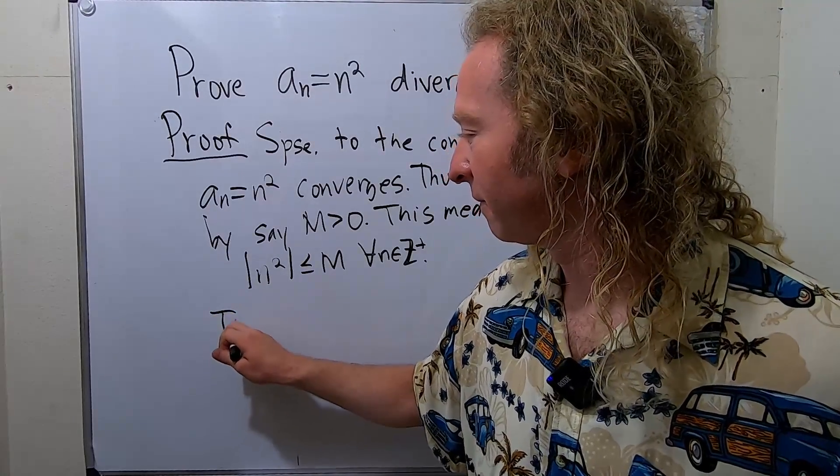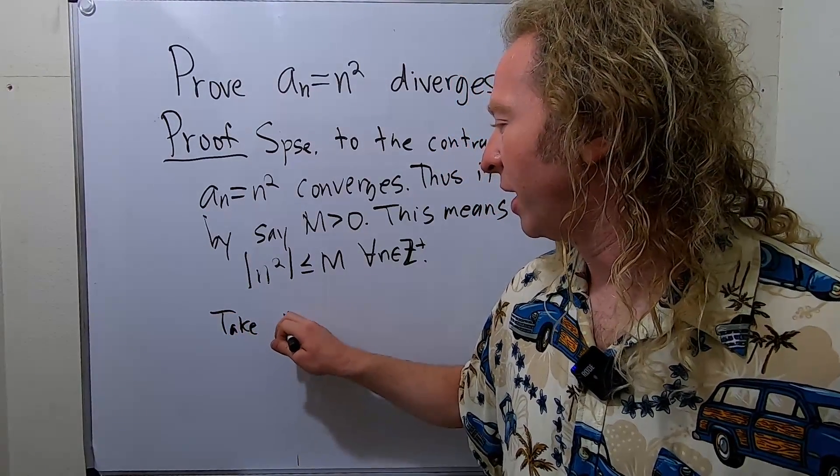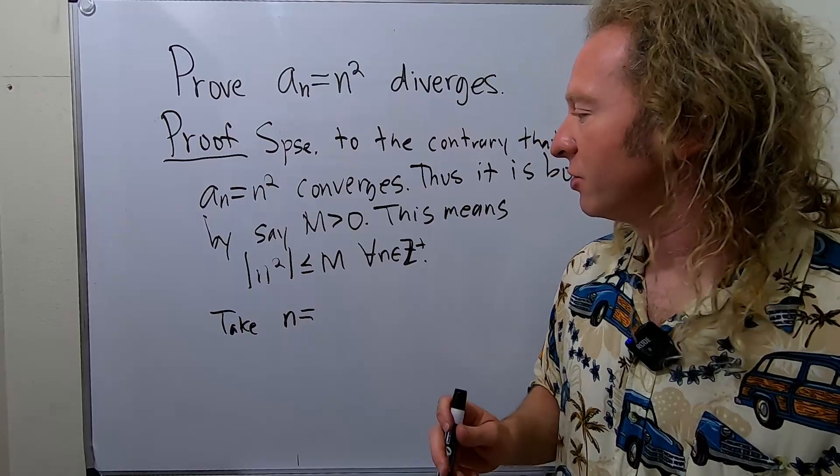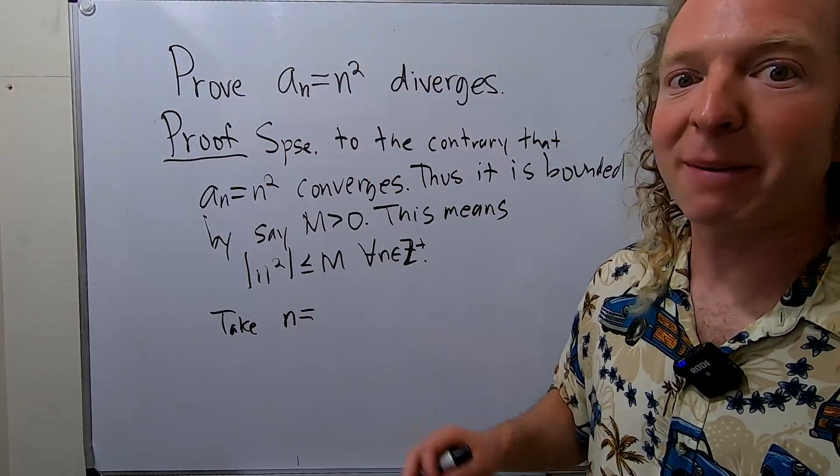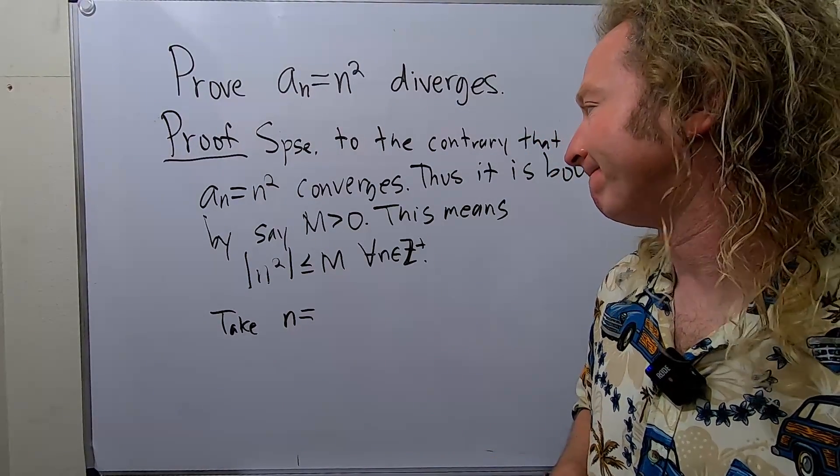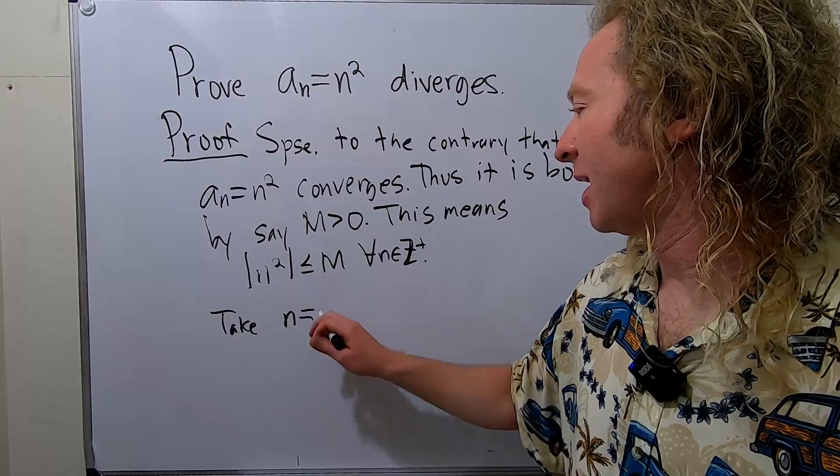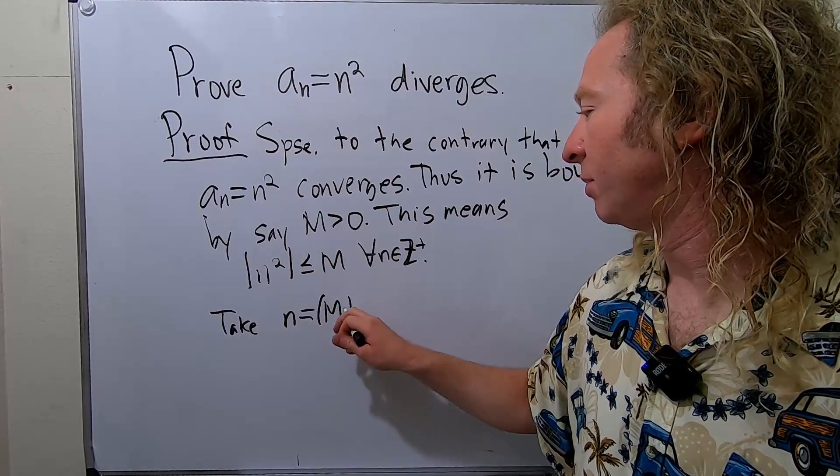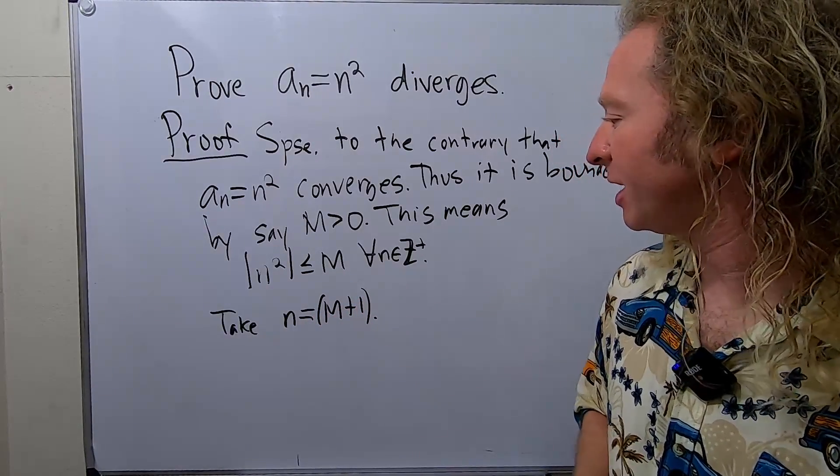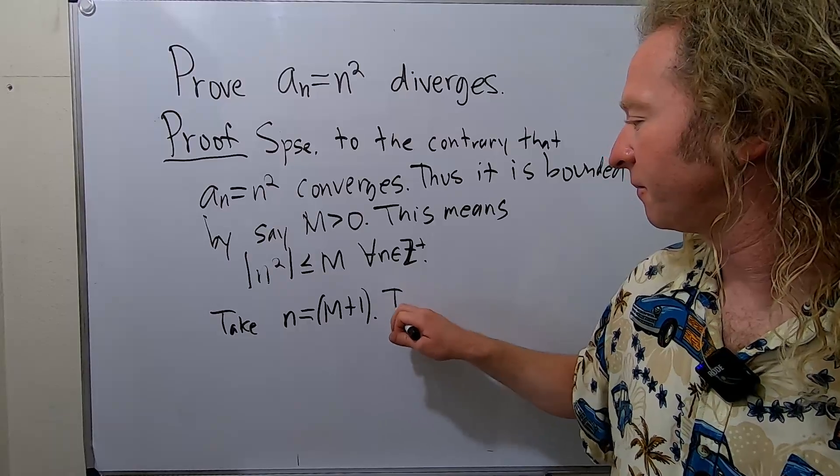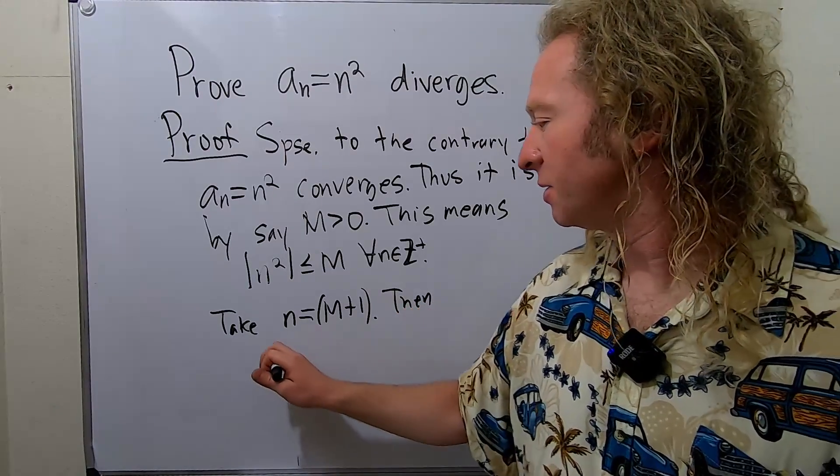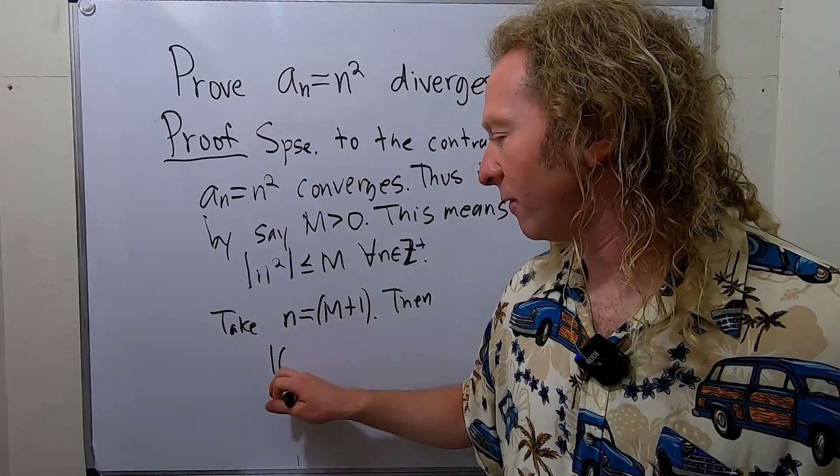That will make us reach a contradiction. So let's take n equal to a positive integer. Let's go with, how about M+1? That's certainly a positive integer. So then, let's look at the absolute value of (M+1)².